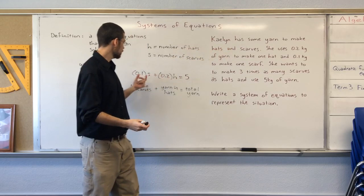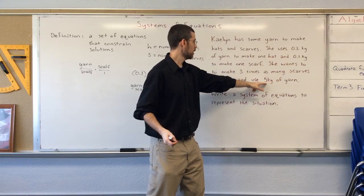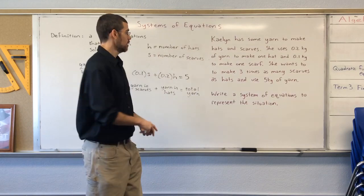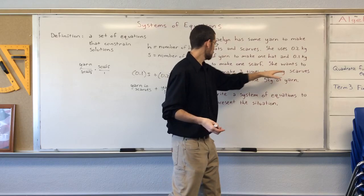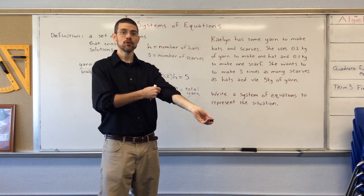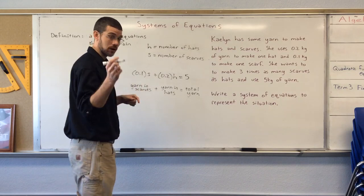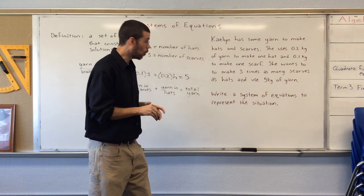Now, if you notice, it includes both of our variables, hats and scarves. It includes three of the numbers that they gave us, 0.2, 0.1, and 5. You'll notice there's a 3 here. That means there's some more information and we need to make that information into an equation. She wants to make three times as many scarves as hats. Three times as many scarves as hats. So, we need to write an equation that represents that.